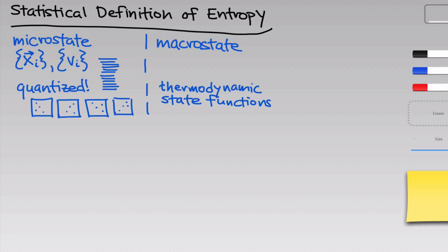The macrostate corresponds to the bulk thermodynamic macroscopic state functions for the system — examples include pressure, volume, temperature, internal energy, and entropy, as well as enthalpy. In the introductory videos, we saw the idea that macrostate functions like internal energy are equal to averages over the microstate. Microscopic energies are averaged to calculate the observed macrostate internal energy U. This idea is going to become important in a second.